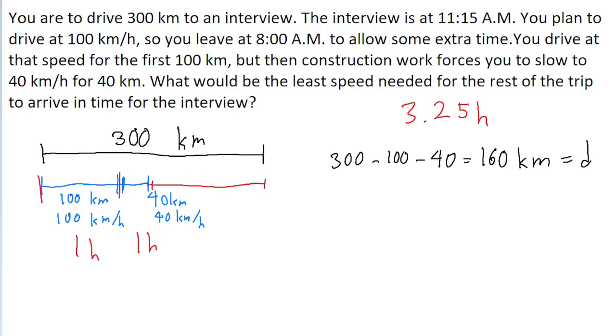So our remaining time is going to be the total time window, 3.25 hours minus two hours. So we have 1.25 hours remaining.